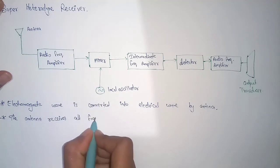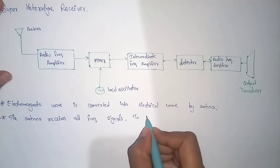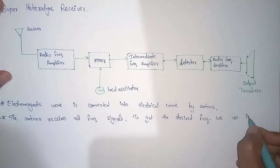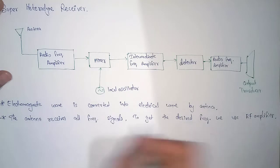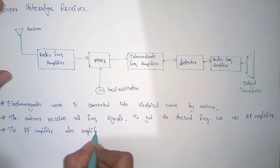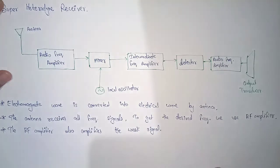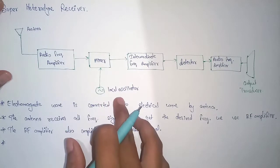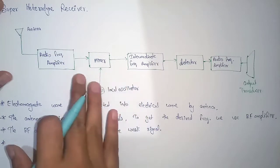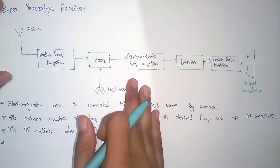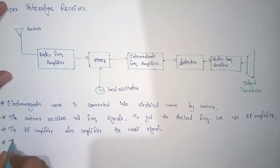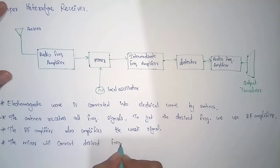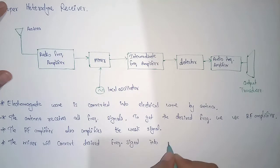To get the desired frequency, we use the RF amplifier. The RF amplifier also amplifies the weak signals received by it. This received signal will be sent to a mixer, and the local oscillator signal will also be sent to the mixer. The mixer will convert the desired frequency signal into a medium frequency signal with the help of the local oscillator.